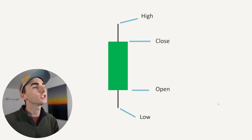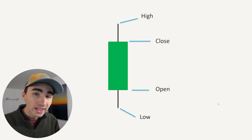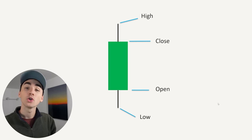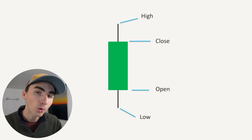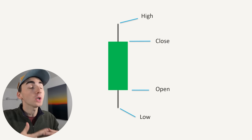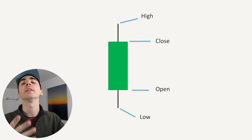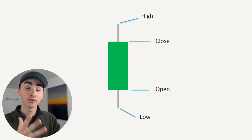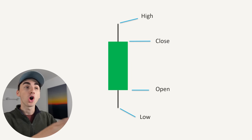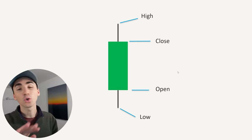Now to dive right into it, let's just go into the basics of what a candlestick says. You have four key points in the candlestick that tell you a lot about what the price of the current market is doing over that candlestick.